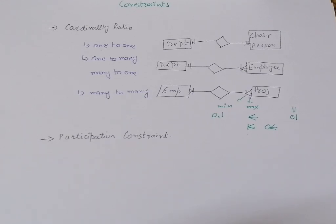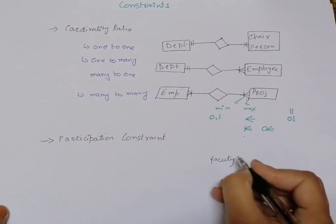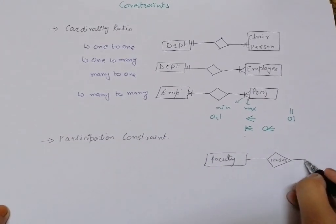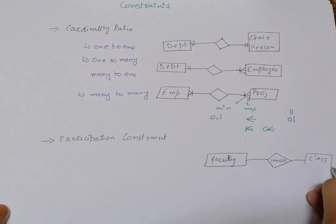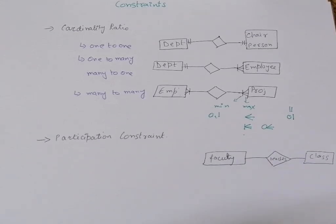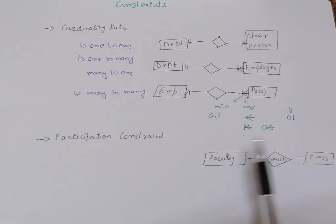To give an example, let's consider the relationship between faculty and class. Each faculty member teaches a particular class. The entity names and relationship names should be close to real-world scenarios — faculty represents teacher, class represents students, and 'teaches' is the relationship between them. One faculty member teaches a particular class. We look at the instances of both entities and identify whether they are participating in a total or partial manner.